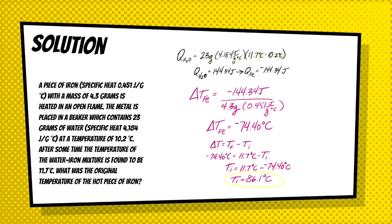So, the answer is the initial temperature of the iron that was heated in an open flame was 86.1 degrees Celsius. Now, how did I come up with that? You'll see that the first thing I did was I tried to calculate the Q of the water. In other words, the amount of thermal energy in joules that the water absorbed. Once I did that, because of the concept of thermal equilibrium, I was allowed to assume that that was the same number of joules that was lost by the piece of iron.